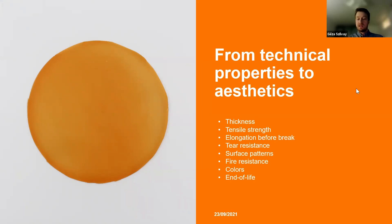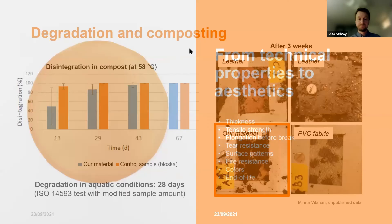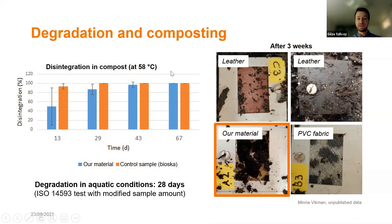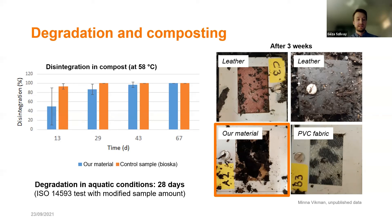We have studied the degradation of this material through composting and aquatic biodegradation tests. In composting, after three weeks our material is almost gone, while leather and PVC fabrics have barely changed. It takes a bit more than a month to fully compost the material. In aquatic conditions it is actually a bit faster — in 28 days it is degraded.